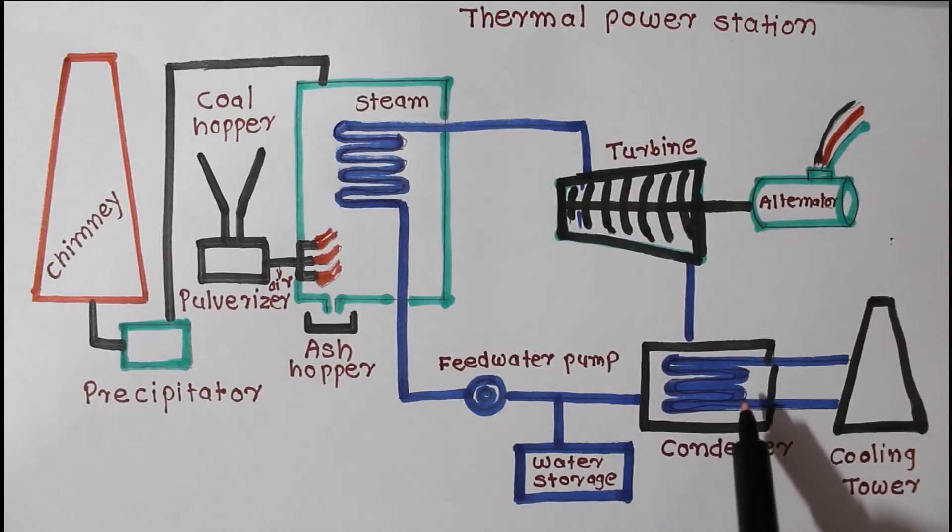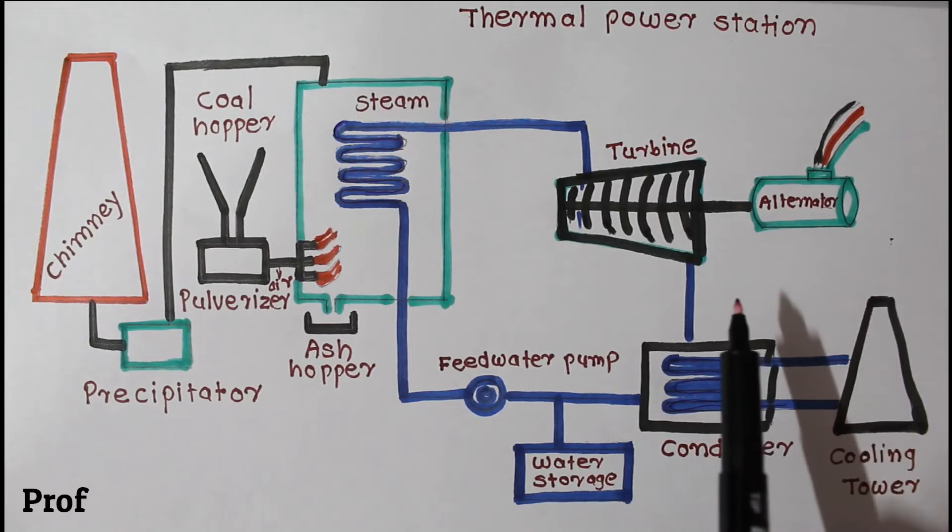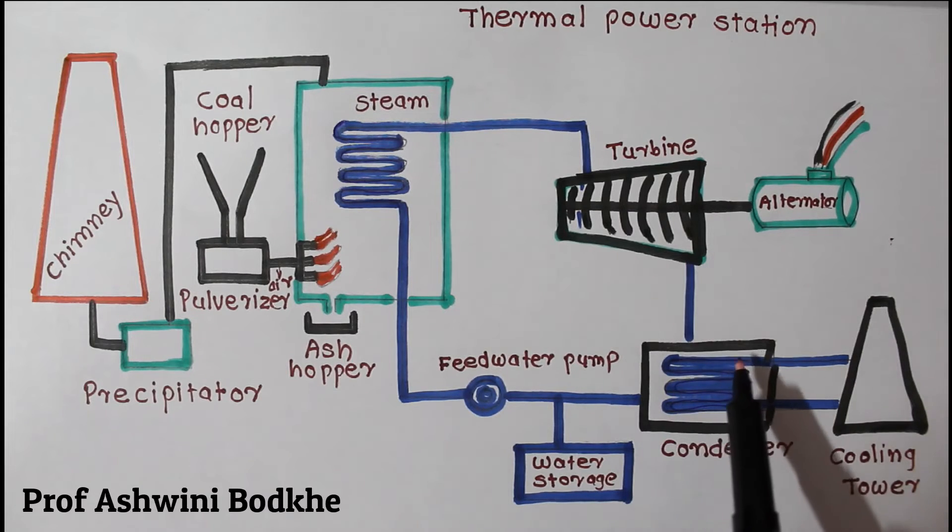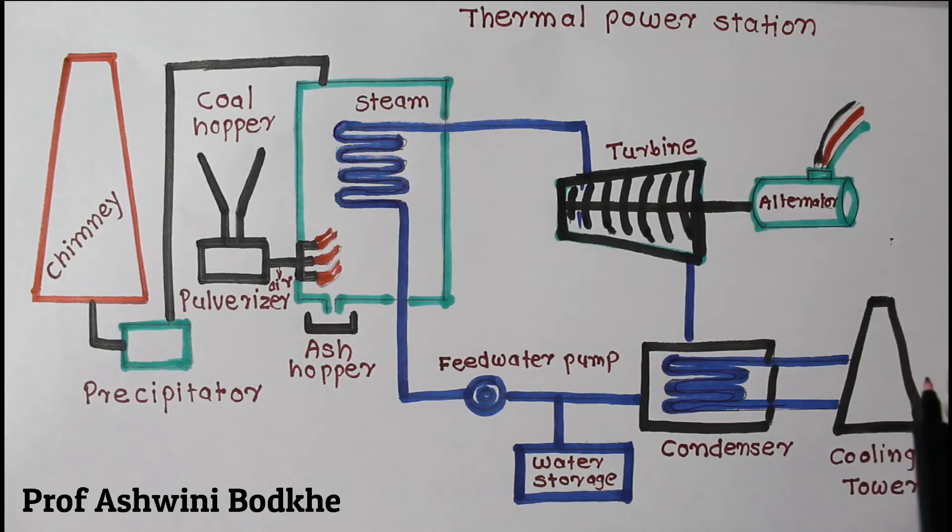Condenser. The surface condenser is a shell and tube heat exchanger where cooling water flows through tubes and exhaust steam is fed into the shell around the tubes. As a result, steam condenses outside the tube.